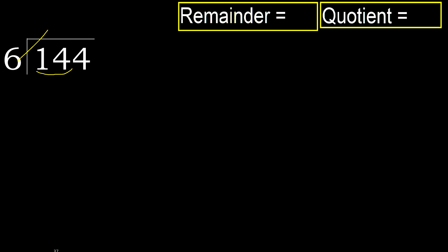But not greater. 6 multiplied by 3 is 18, 18 is greater. Multiply by 2, 12 is not greater. Ok, 14 minus 12 is 2. Next.